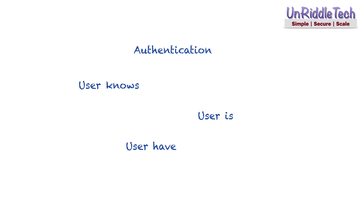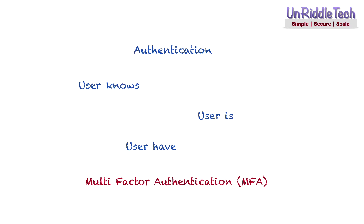That additional factor could be based on what the user has, like a hardware token, or based on what the user is, like a fingerprint. This process of using multiple factors or methods for authentication is called multi-factor authentication, or MFA. By implementing MFA you can improve the security of the authentication process and reduce the likelihood of a bad actor impersonating the user.